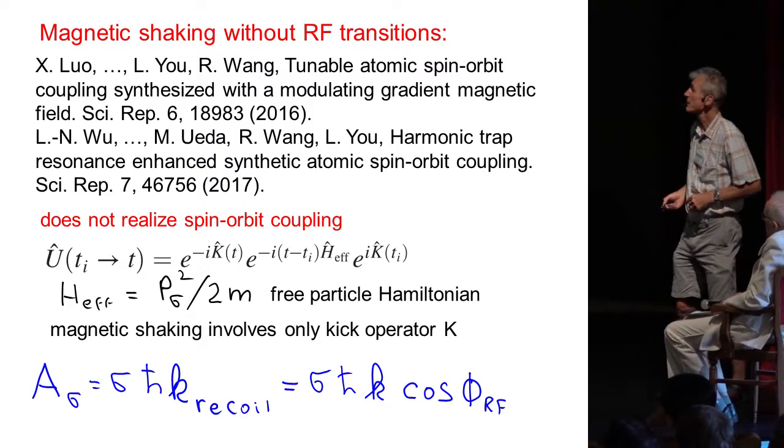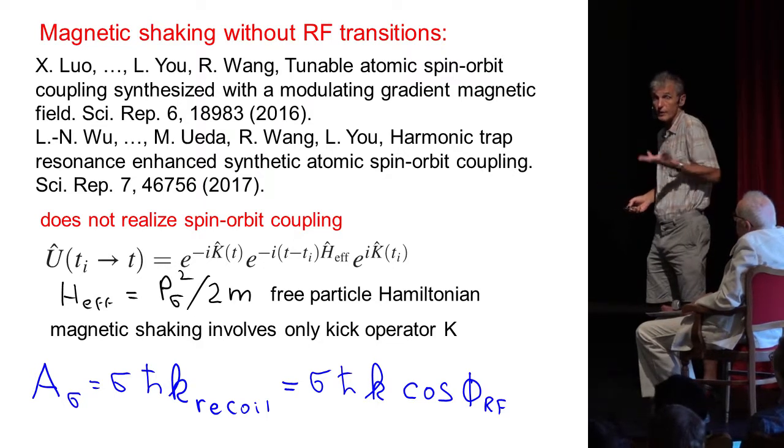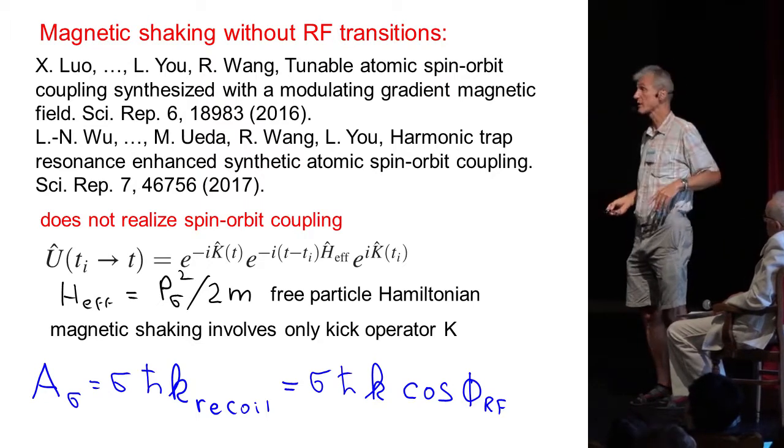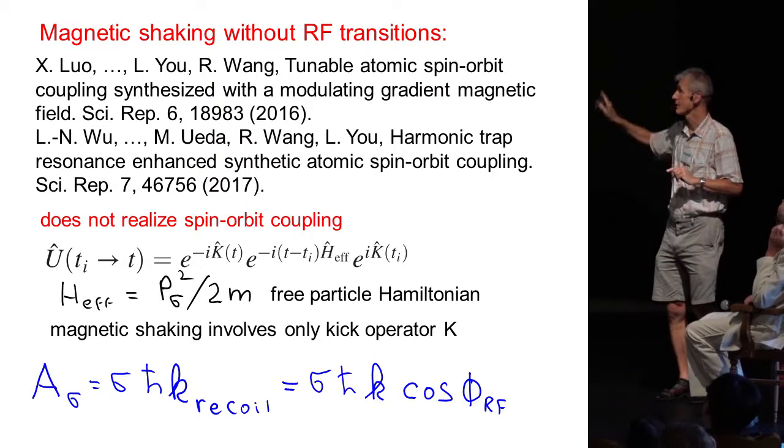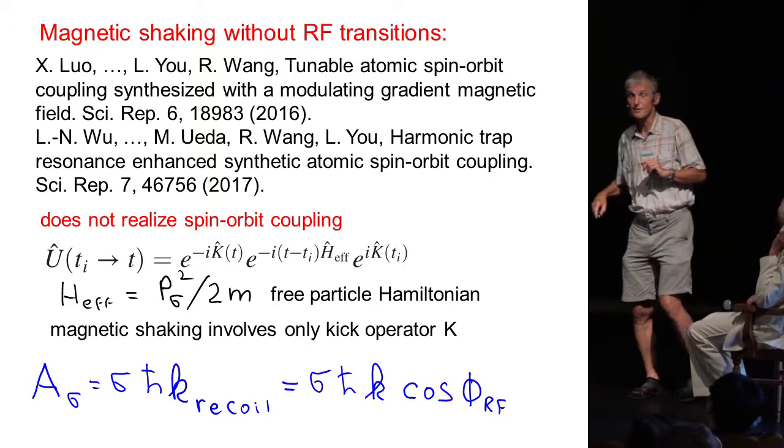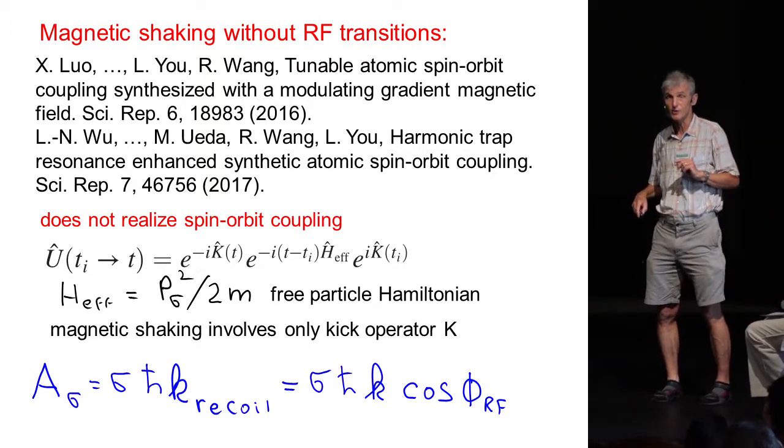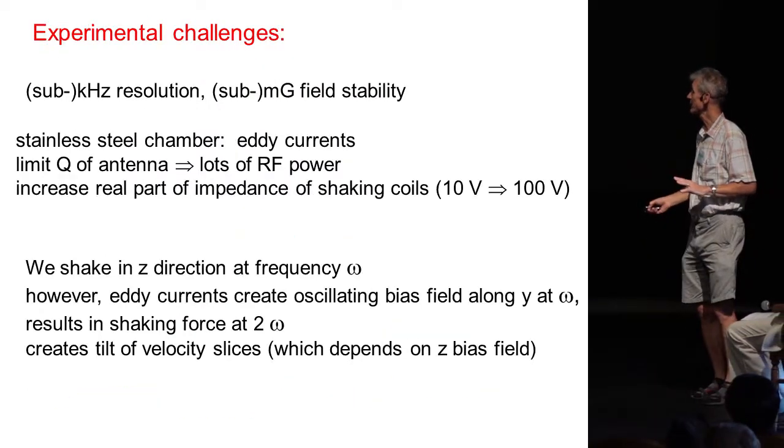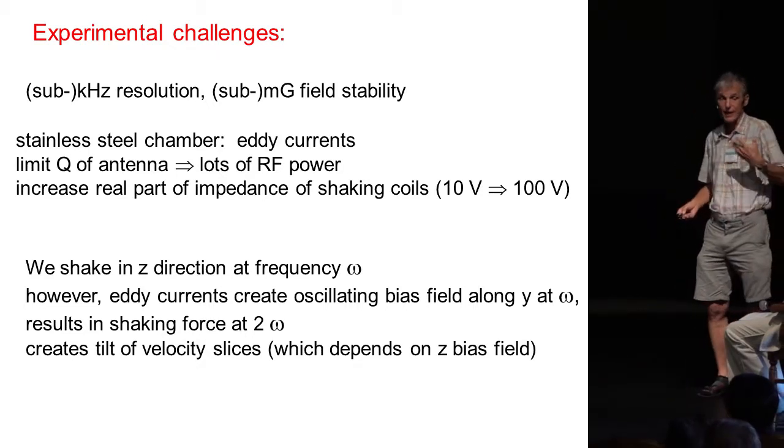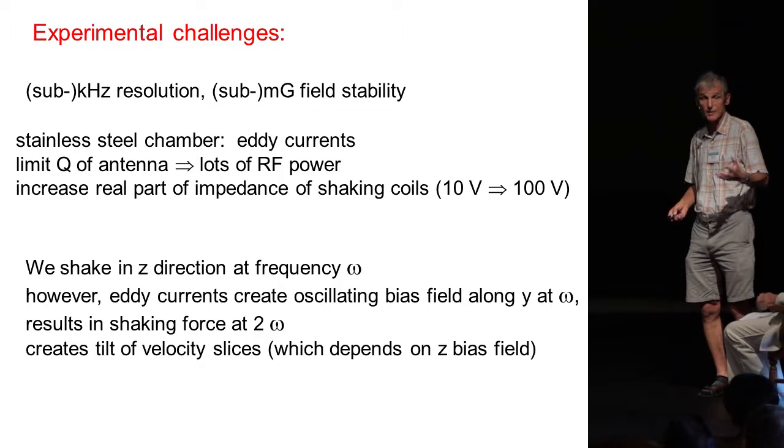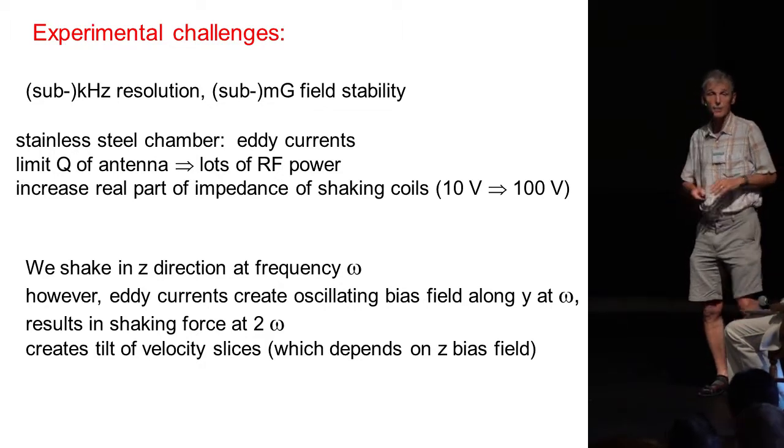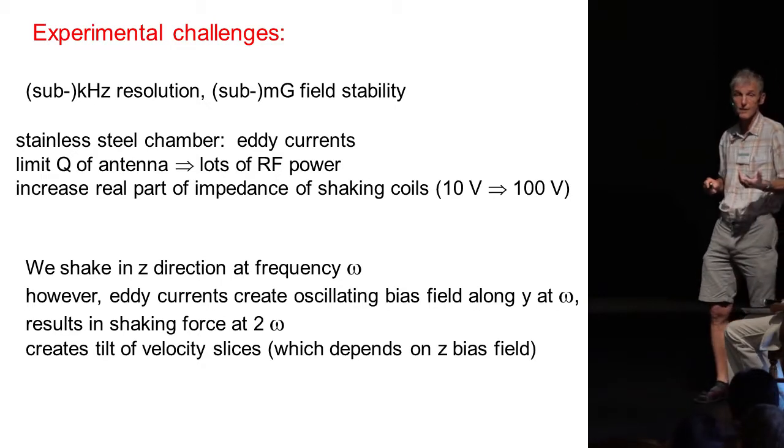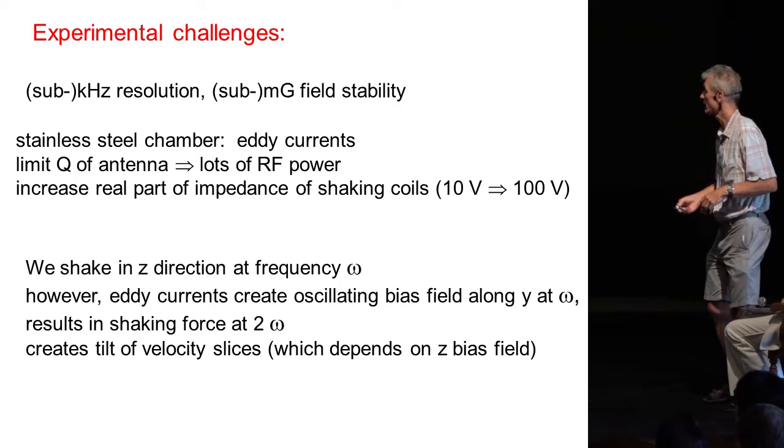We had some experimental challenges because if you have magnetic shaking and then want to observe Doppler effects of a few hundred hertz, you need really very good field stability. And maybe the rest shouldn't be the subject of a talk, it's more the subject for supplemental information in the paper. We had a stainless steel chamber, and we had eddy currents, and the eddy currents affected both the radio frequency and also modified the magnetic fields, the time-dependent magnetic fields we put on. And it was a major problem to first understand them and then account for them.